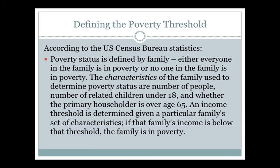Generally, we're looking at the number of people, and it makes a difference whether the people in the family are under 18, because they would be considered children, or if they're above the age of 65. This impacts the cost in terms of how much it would cost to feed and house the family. So, an income threshold is determined given a particular family's set of characteristics. If that family's income is below that threshold, the family is in poverty.